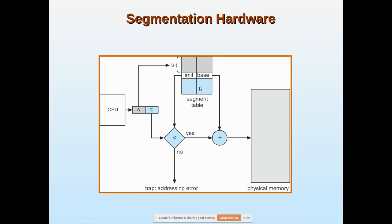We are going to see how address mapping of logical address to physical address works in segmentation. The CPU generates the logical address — that is how the user sees the address. Here is the segmentation table. The base address where a segment is stored in physical memory is kept here, and the limit — the length of the segment — is stored here.